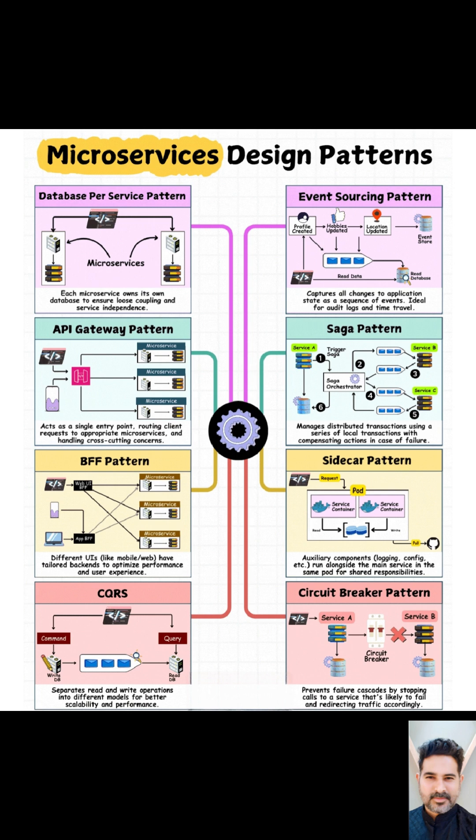Event Sourcing Pattern: imagine keeping a detailed history of every change made to data. This provides a record of what happened and allows us to see past states. But it requires a lot of storage.